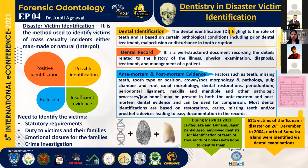The third category is exclusion, where the ante-mortem and post-mortem data are clearly inconsistent and we can surely say that this is not the person with this identity.